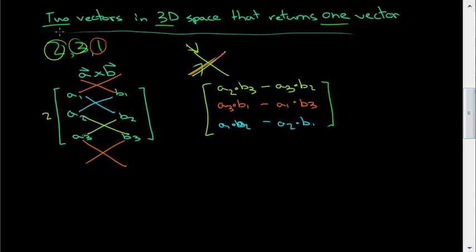is that you have two vectors in 3D space that returns 1. So then we know the sequence is 2, 3, 1. Then x shape.